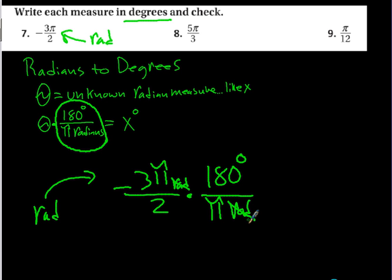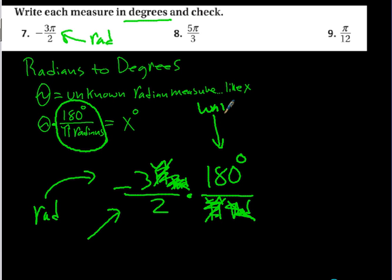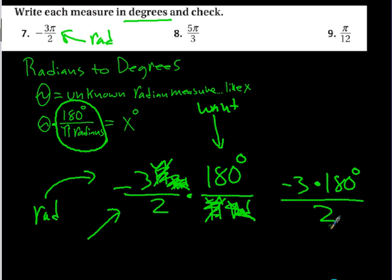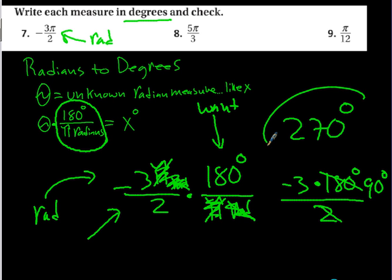If the given radian measure contains pi, the pi will cancel — but you can't assume it always will, because the value might not have pi in it. After cancellation I'm left with negative 3 times 180 degrees over 2. Since 180 over 2 is 90, and 3 times 90 is 270, the answer is negative 270 degrees.